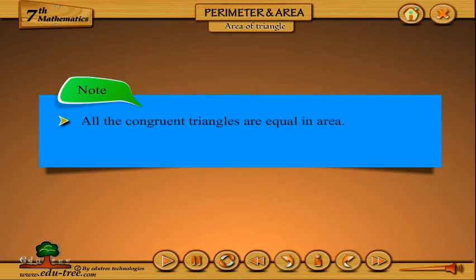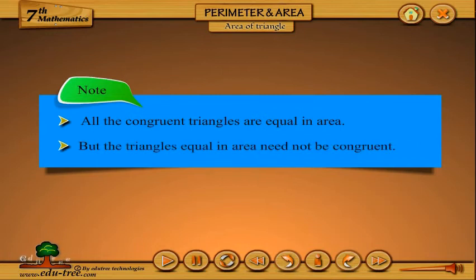Note: All the congruent triangles are equal in area. But the triangles equal in area need not be congruent.